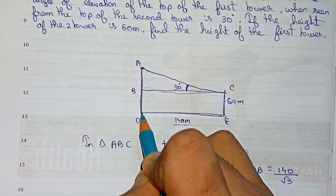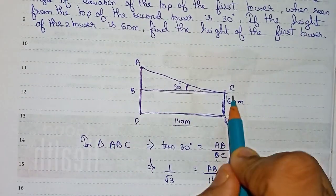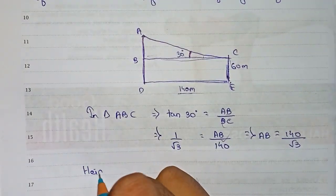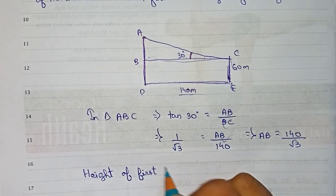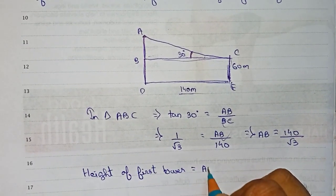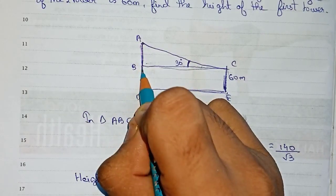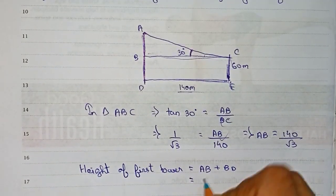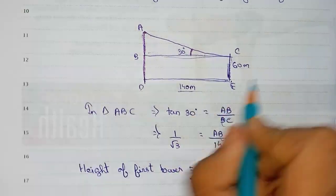Now BD value will be equal to CE value. The height of the first tower equals AB plus BD. So AB equals 140 by root 3, plus BD equals 60. That gives us the total height of the first tower.